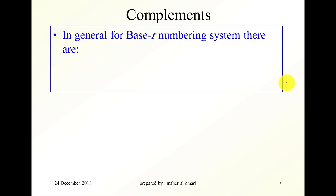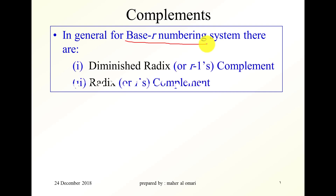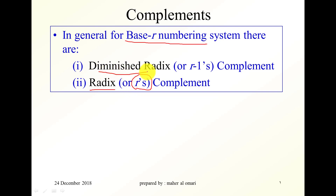Complements. For any base R numbering system, there are two complements: something called the radix complement and something called the diminished radix complement. The radix complement is the R's complement. The diminished complement, or the diminished radix complement, is the R-1's complement.